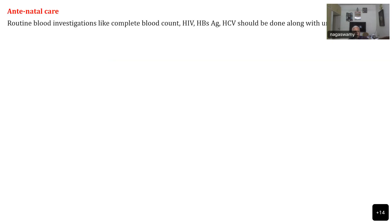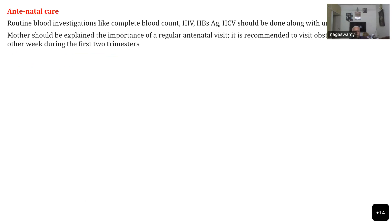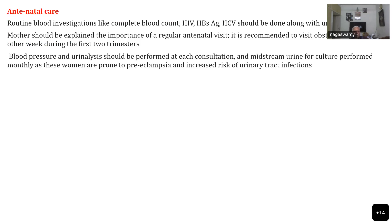Coming to antenatal care, routine blood investigations like full blood count, and screening to rule out HIV, HCV, and hepatitis should be done since these patients receive repeated transfusions. Patients should be explained the importance of regular antenatal visits, especially during the first two trimesters. Blood pressure and urine analysis should be performed at each consultation, and midstream urine should be collected to rule out urinary tract infection and pre-eclampsia.